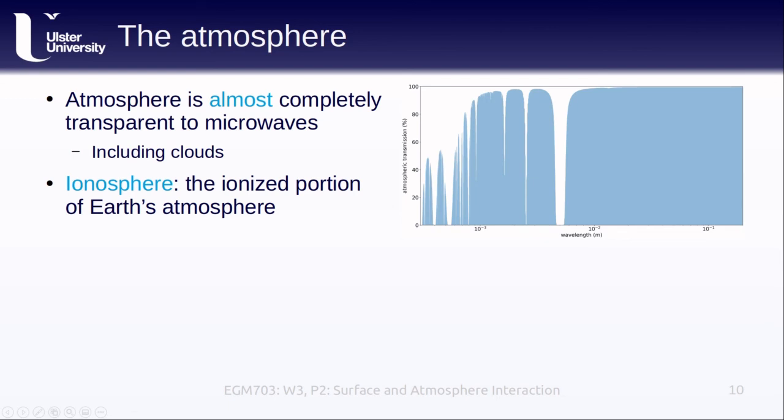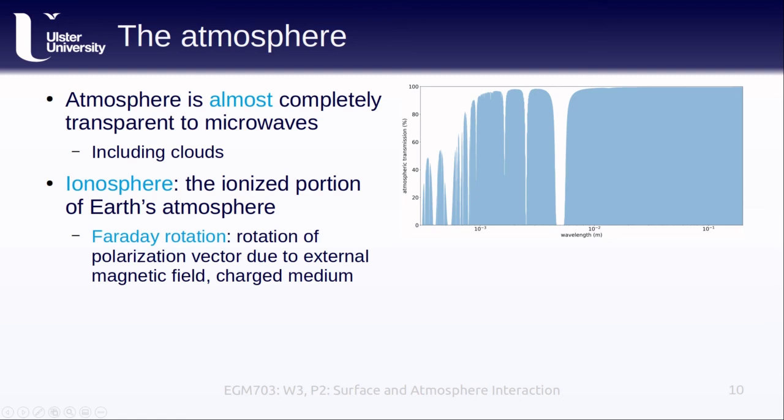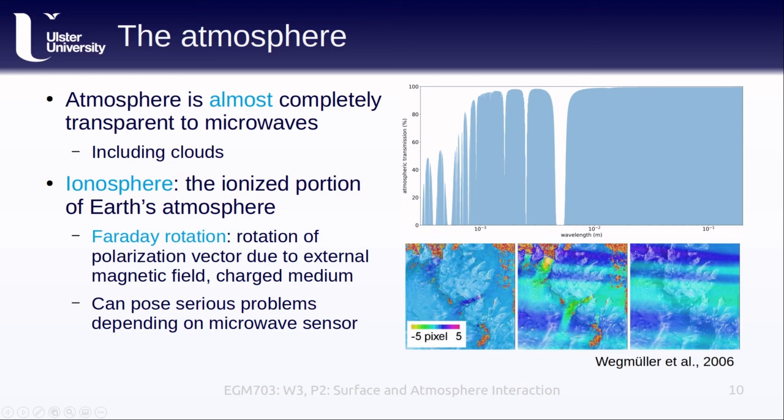This happens in particular through a process known as Faraday rotation, which is the rotation of the polarization vector, or the vector that the electric field is oscillating in, as a result of traveling through a charged medium in the presence of an external magnetic field. Depending on the wavelength or the frequency of our sensor, this actually changes what we measure. The example here, from a paper by Wegmuller and others from 2006, shows the effects that this has on estimates of surface displacement derived from L-band radar. This is a signal with a wavelength of about 24 centimeters.